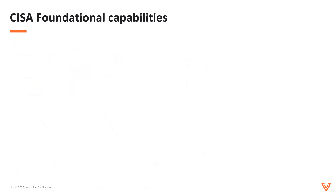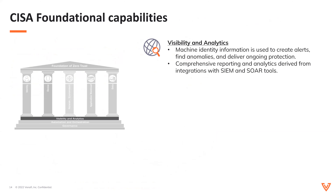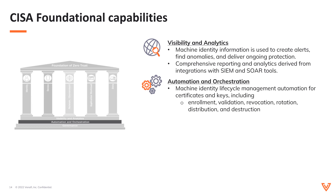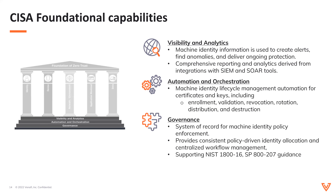Shifting into the CISA Zero Trust maturity model, which is heavily influenced by NIST SP 800-207, there's a common set of functionalities that CISA applies across the five category pillars of IT they've identified. This helps agencies get a sense for how mature they are from a Zero Trust implementation standpoint. Feeding into these five pillars are three core capabilities: visibility and analytics, automation and orchestration, and governance.